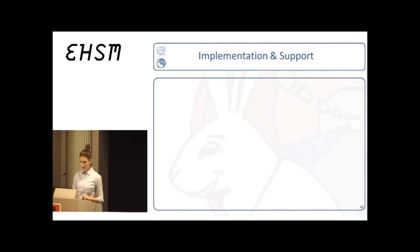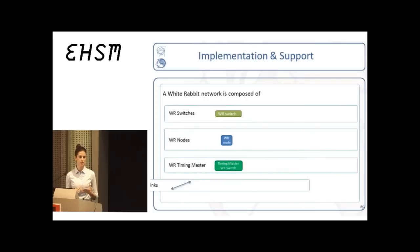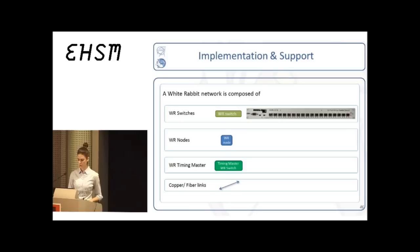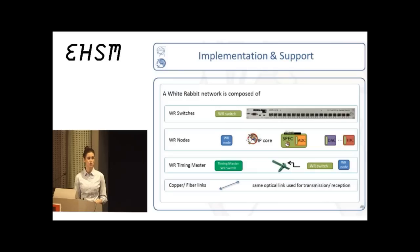And as we have seen it so far, a White Rabbit network is composed of switches, nodes, the timing master, and the copper or fiber links. Here is an image of the White Rabbit switch, a current version of it with 18 ports. The White Rabbit node comes in the form of an IP core that can be easily integrated in any FPGA-based design. An example application of a White Rabbit node comes from National Instruments and their PXI White Rabbit node that receives data and timing information from the White Rabbit network and distributes them to the rest of the modules inside the PXI crate. Another example comes from us. It's a SPEC board, and it's designed as a carrier board, and it can be combined with any kind of mezzanine, like ADCs, DACs, or time to digital converters. The master is a node or a switch that is connected to a very precise clock. And finally, the same optical link is used for both transmission and reception of data.